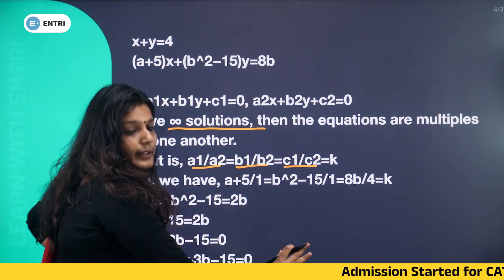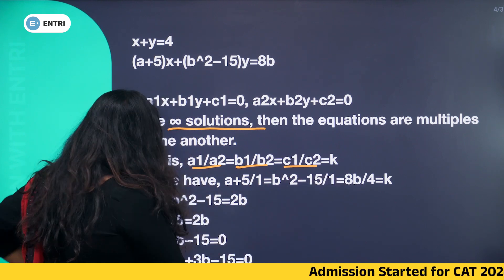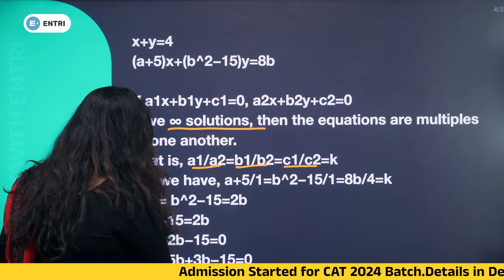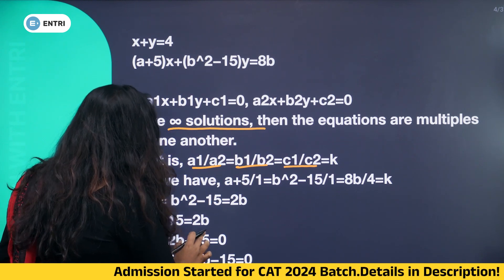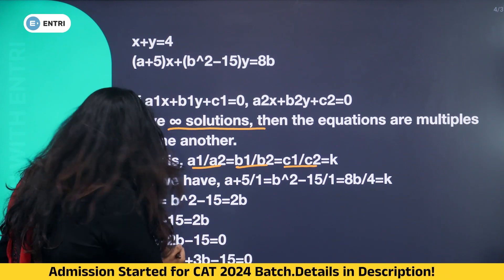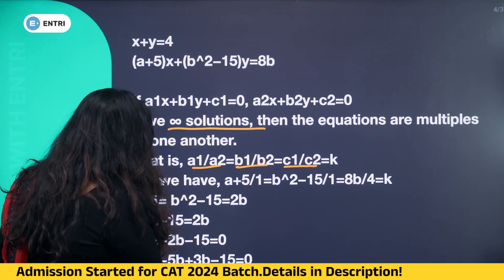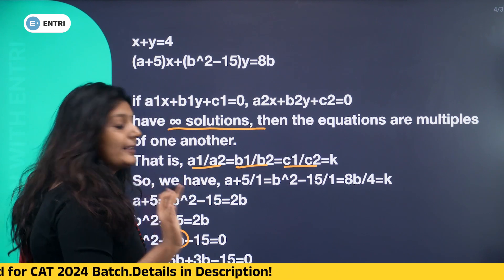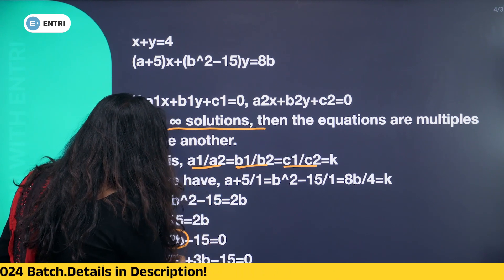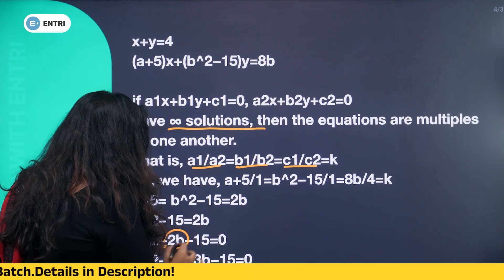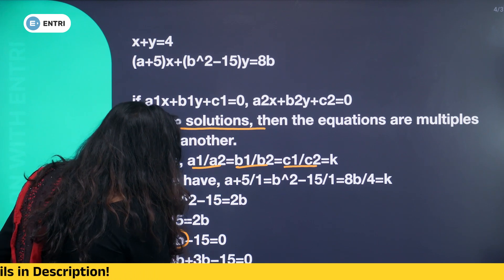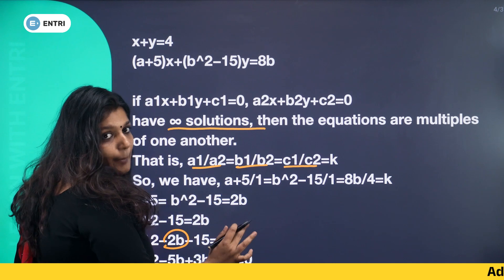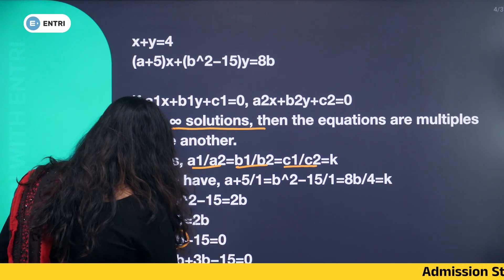Now let's solve this. From b² minus 15 equals 2b, we transpose to get b² minus 2b minus 15 equals 0. We split the middle term: minus 5b plus 3b gives minus 2b. So b² minus 5b plus 3b minus 15 equals 0.